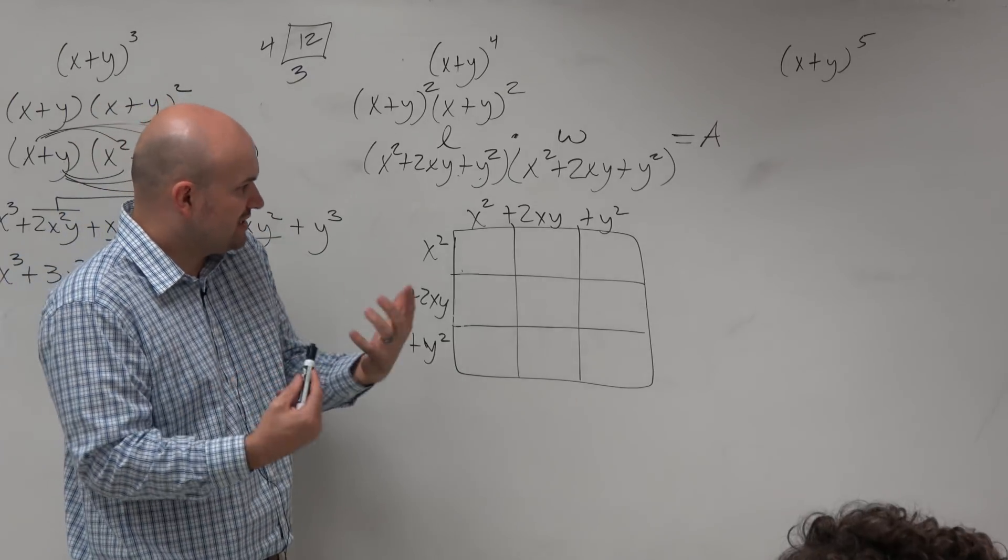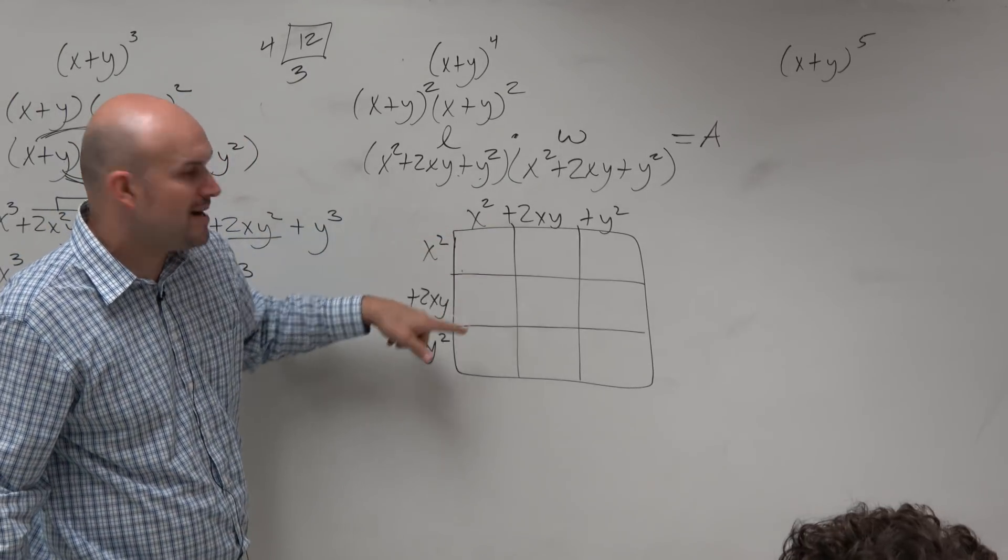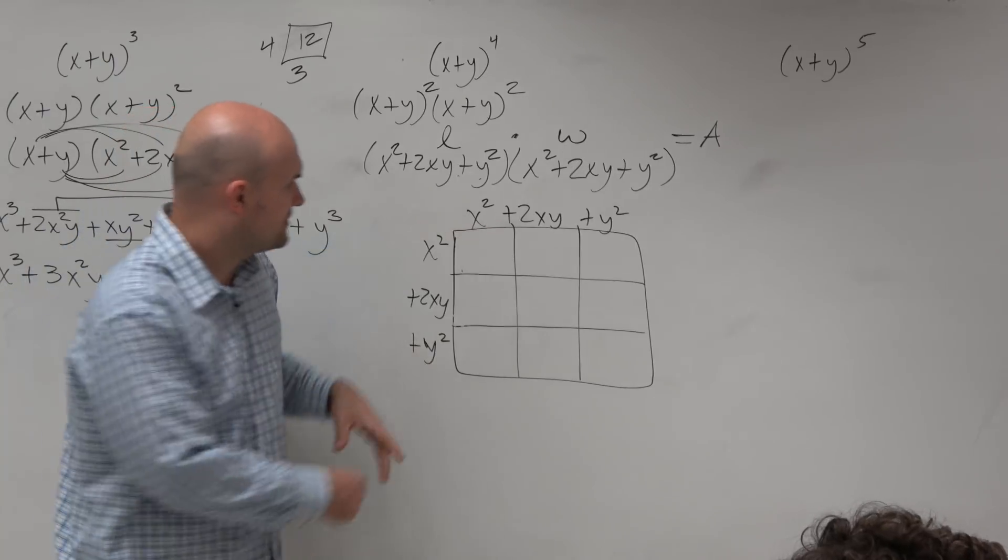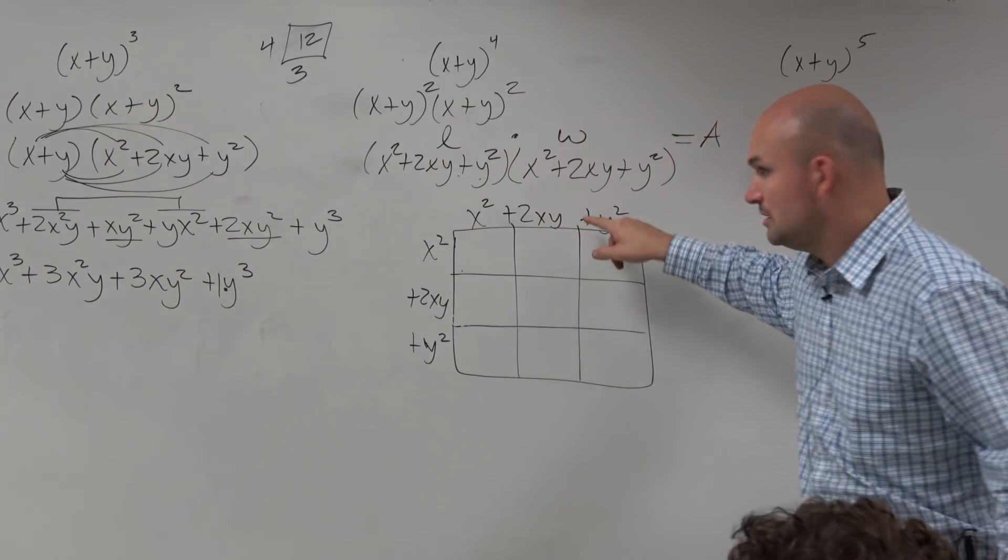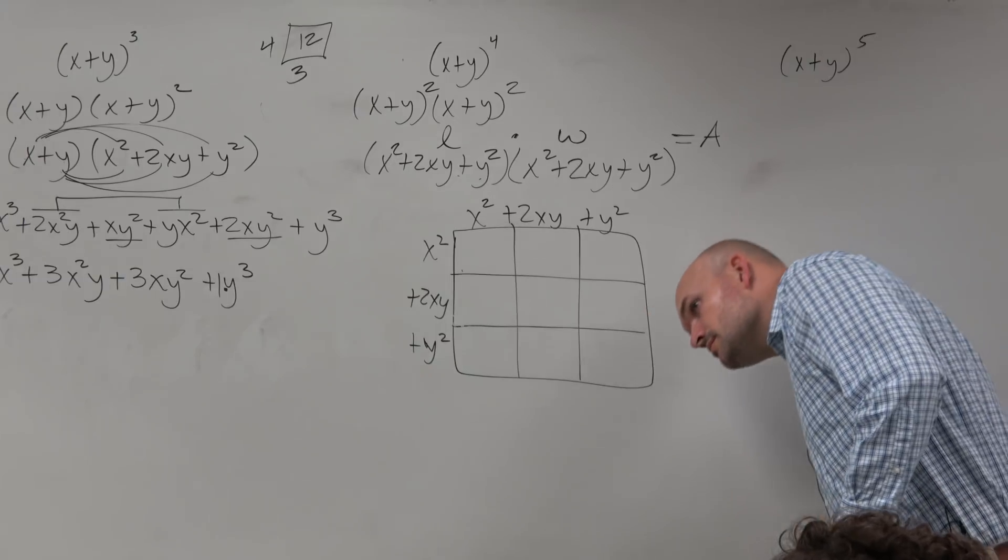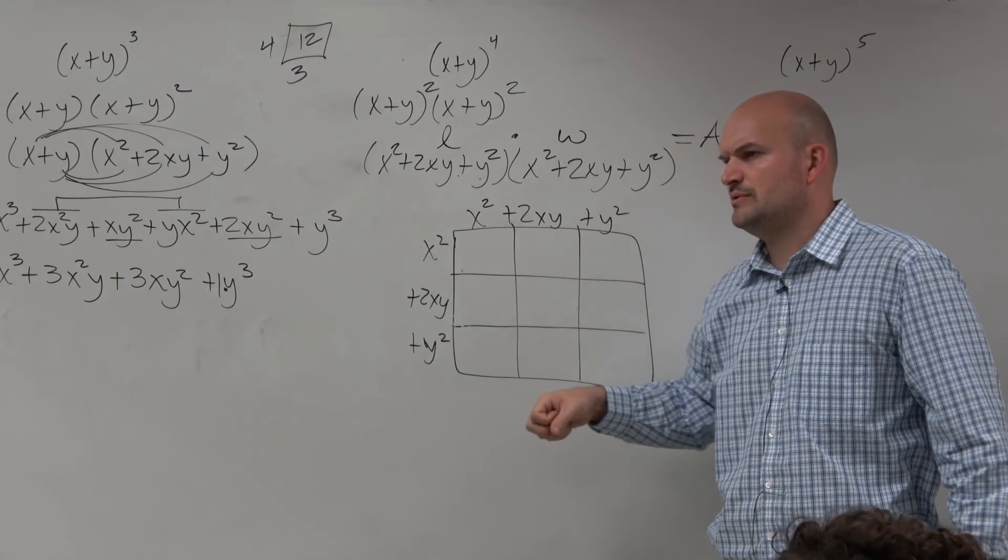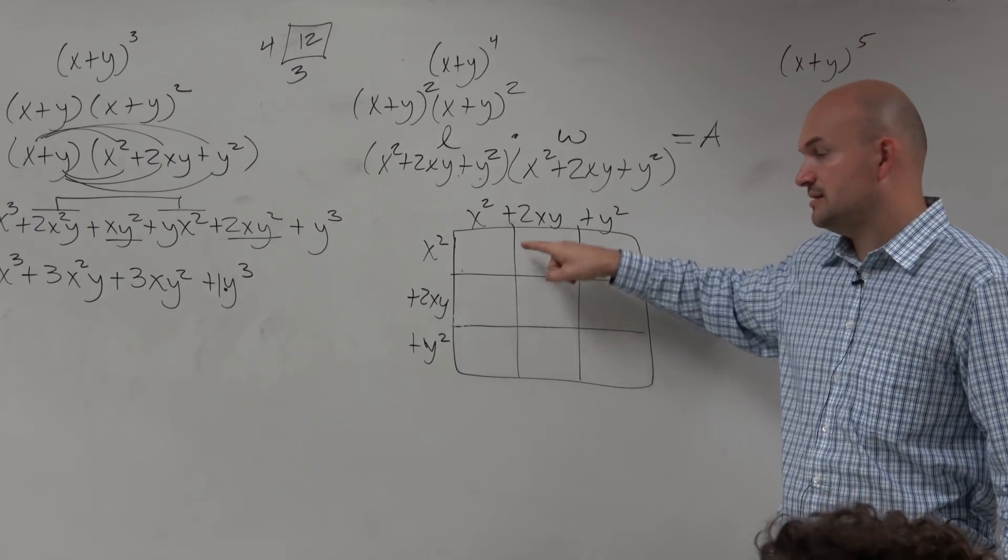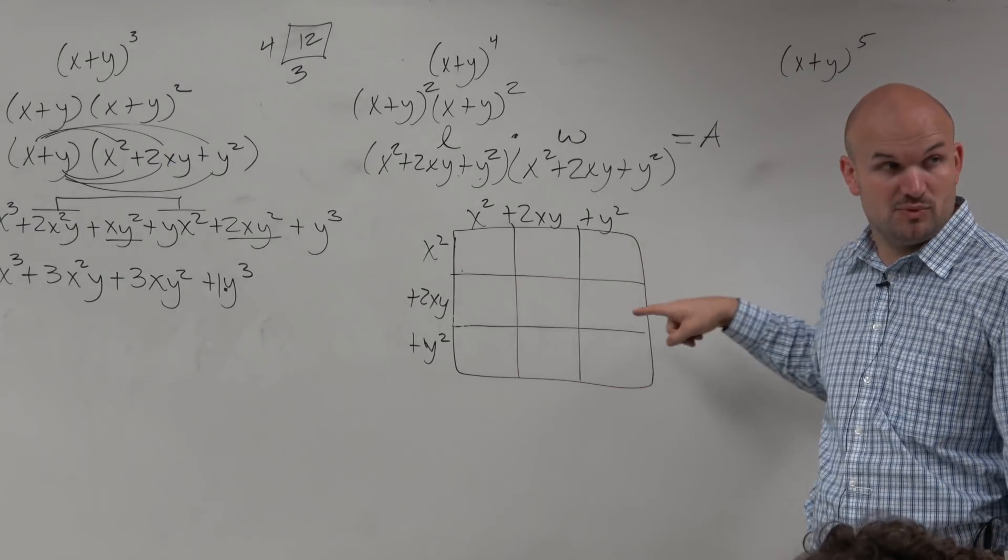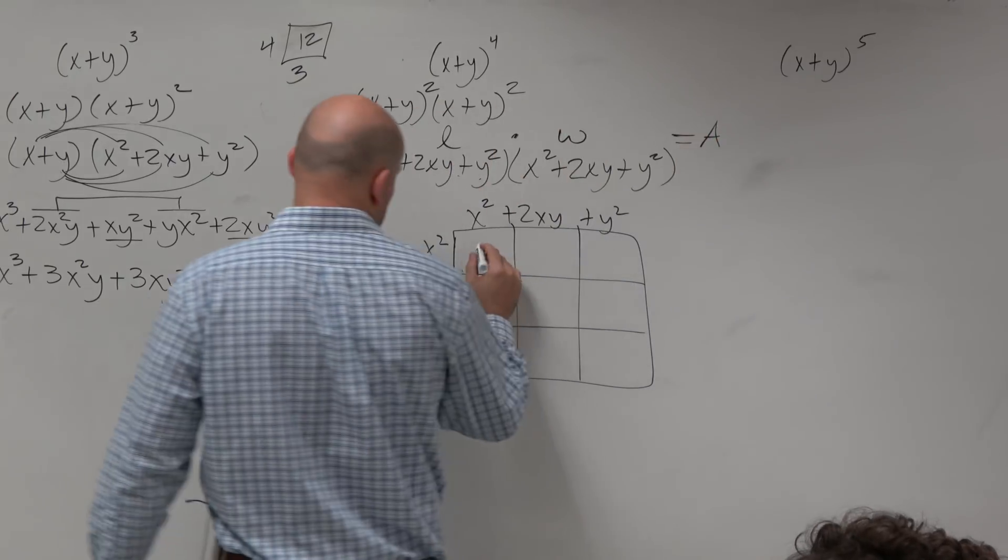So it's a lot easier, or at least cleaner, to think about, well, how do I find the area of each box? Length times width. Length times width. Length times width. Length times width. Length times width. Length times width. So I'm going to do this rather quickly.